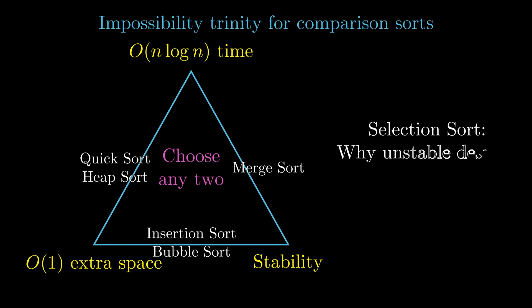Selection sort, however, is an anomaly. It is an O(n²) algo, and so since it is not time optimal, it should be able to achieve both O(1) space complexity and stability. It does achieve O(1) space complexity, but it is not stable.